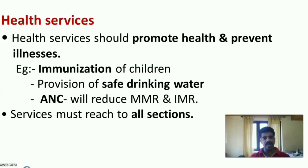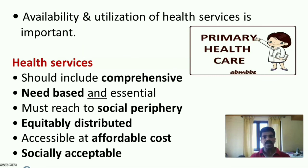The last factor is health services. Health services should promote health and prevent illness — for example, through immunization of children, provision of safe drinking water, and antenatal care, which will reduce MMR and IMR — maternal mortality rate and infant mortality rate. Health services must reach all sections of society. They should be comprehensive, need-based, and essential; reach the social periphery; be equally distributed; accessible at affordable cost; and socially acceptable.